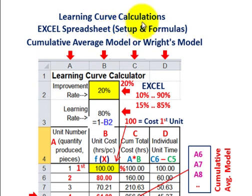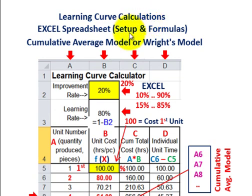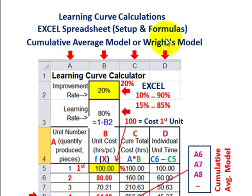What we're going to be going over here is learning curve calculations, and all we're going to be doing is setting up the Excel spreadsheet with formulas for our different learning curves. We're going to be looking at two different learning curve models: the cumulative average model or the Wright's model, and also the incremental unit time or cost model, known as Crawford's model.